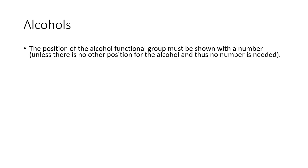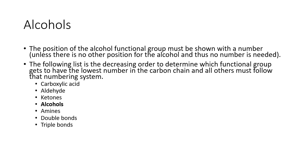The position of the alcohol functional group must be shown with a number unless there's no other position for the alcohol and thus no number is needed. The following list is the decreasing order to determine which functional group gets to have the lowest number in the carbon chain and all others must follow that numbering system. The alcohol has precedence over the double and triple bonds. If you're using the hydroxy prefix it comes in the alphabetical order with all the other side groups.